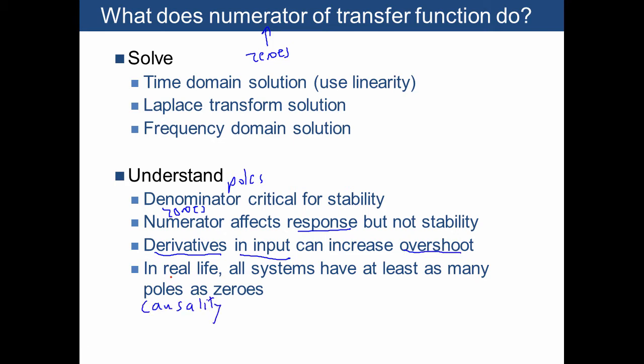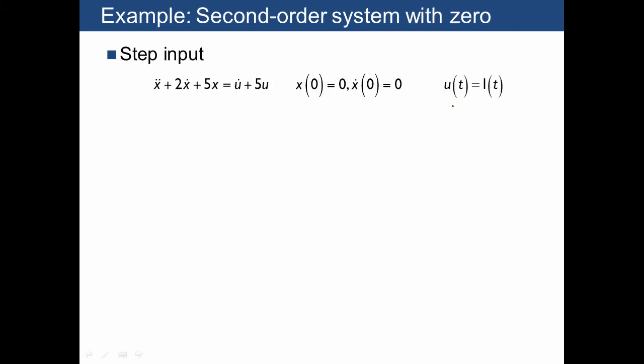Another issue we'll discuss today is causality, which talks about a practical issue of real life, which is that a system has to have at least as many poles as there are zeros.